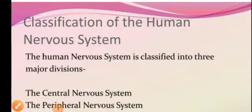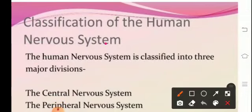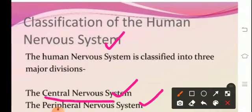In this module we will be continuing with our ongoing chapter of biology, Chapter 7: Control and Coordination. We will basically be discussing about the human nervous system. The human nervous system comprises of the central nervous system and peripheral nervous system. The central nervous system (CNS) comprises of the brain and spinal cord.